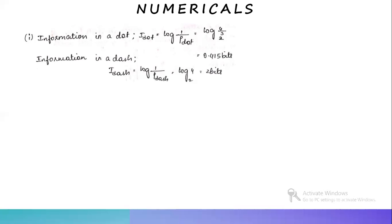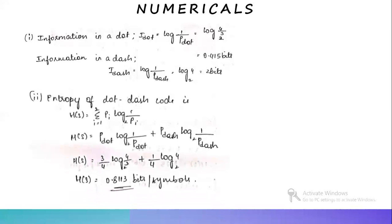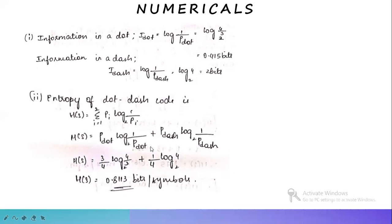The second part is the entropy of the dot-dash code. H(S) equal to summation i equal to 1 to 2, since there are only two symbols — dot and dash. So H(S) equals p_dot·log(1/p_dot) base 2 plus p_dash·log(1/p_dash) base 2. Substituting p_dot equal to 3/4 and p_dash equal to 1/4, solving gives entropy equal to 0.8113 bits per symbol.